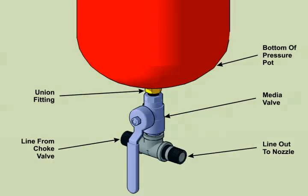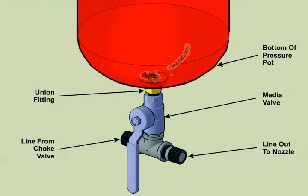The bottom inside of some of the less expensive pressure pots is similar to a funnel. If you can see inside the pot, all of the abrasive packs into the bottom of this funnel and can easily restrict or plug the flow. This is especially problematic when using very fine media or when the humidity is high and the abrasive has a lot of moisture in it.